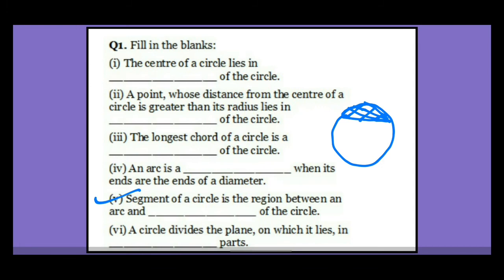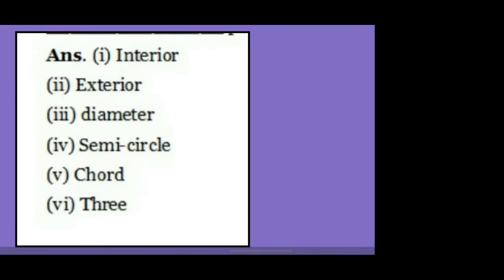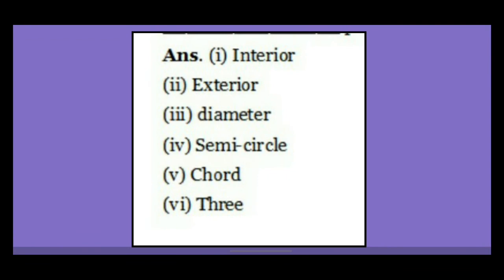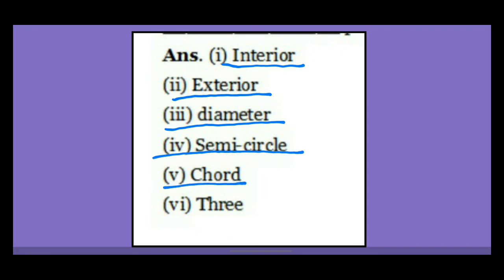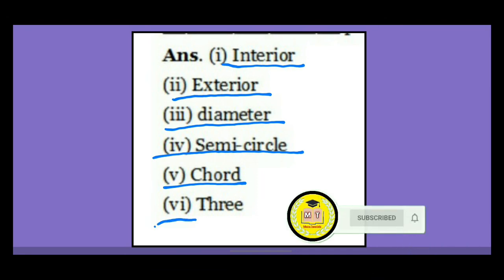When you take a circle, a point can be inside, outside, or on the circle. So it is dividing into three parts — inside, outside, and on the circle. The answers are: interior, exterior, and on. Let us see all six answers once again: the center is in the interior; if a point is beyond the radius it will be exterior; diameter is the biggest chord; semicircle divides into two equal parts; the segment is the region between arc and chord; and a circle divides the plane into three parts — interior, exterior, and on the circle.